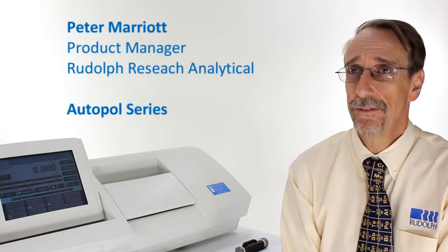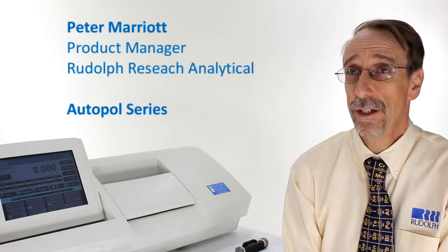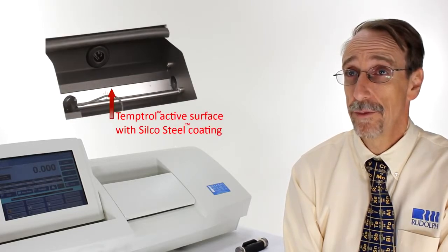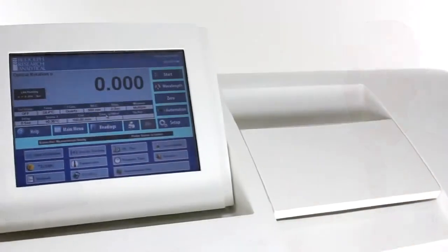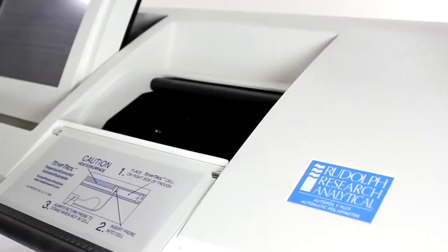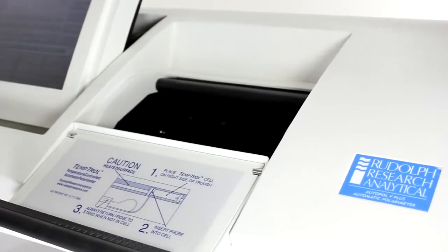This video covers how to fill cells and make measurements using a Rudolph Polarimeter equipped with exclusive and patented Temptrol heating and cooling systems. Although this demonstration is done using an Autopol 5 Plus, the procedure is similar for all models equipped with Temptrol.